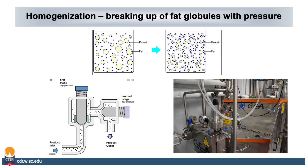Homogenization is the breaking up of fat globules with pressure. In the new raw milk processing area, we will have a GEA homogenizer. As you can see, with active homogenization the fat globules decrease in size and get coated with more proteins. There are two stages in homogenization: the first stage is under high pressure and the second stage is under low pressure. The drop in pressure is what causes the fat globules to break apart.